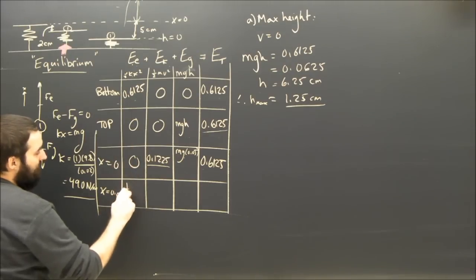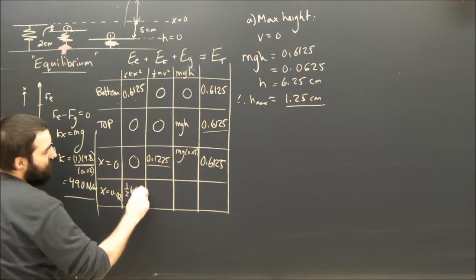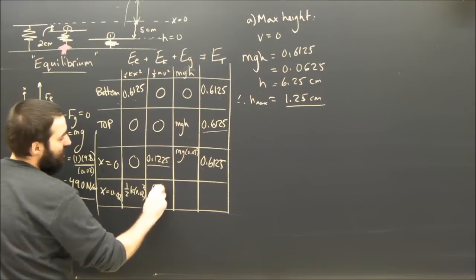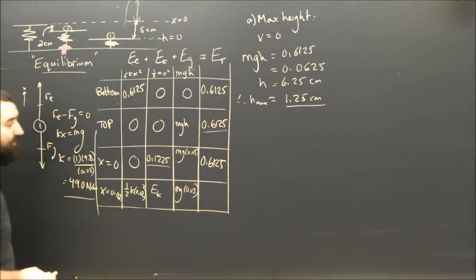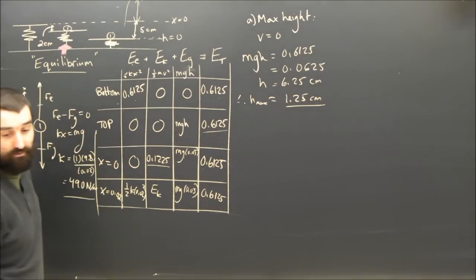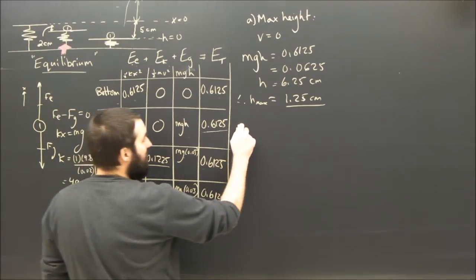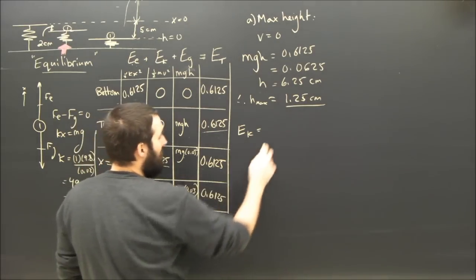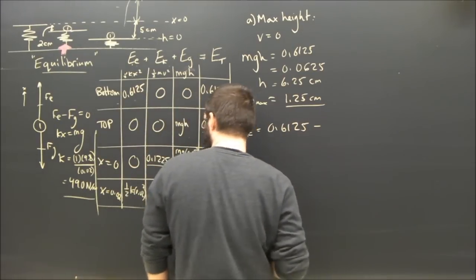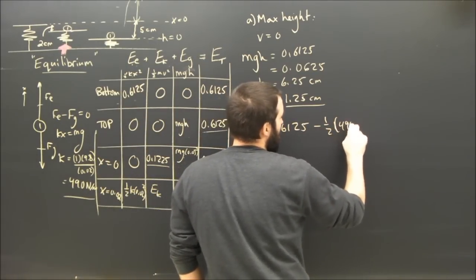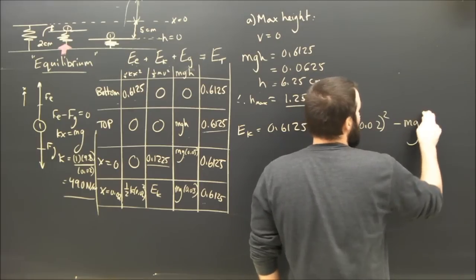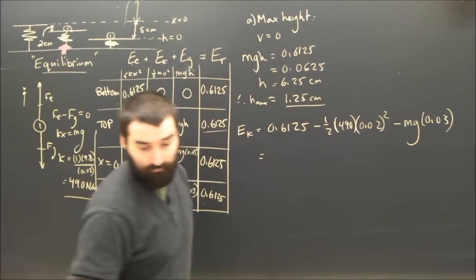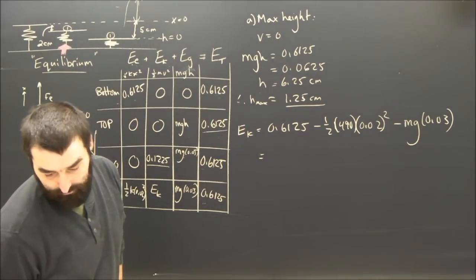So why don't we just test it and then see what happens. What happens at the equilibrium? What about when X equals 0.02? What happens then? Then we have a half K times 0.02 squared as the spring energy, where VK is what we're trying to find. And we have MG times 0.03. The height is now 3 centimeters above zero. And of course the total energy is still 0.6. So we can see that the kinetic energy is going to be equal to 0.6125 minus a half times 490 times 0.02 squared minus MG times 0.03.